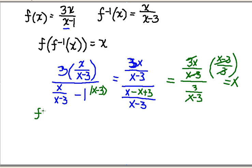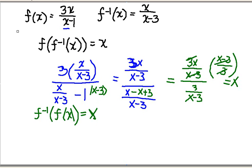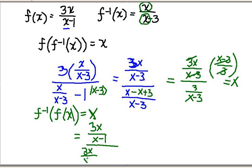Now let's try: does the composition of f inverse of f of x equal x? In this one, I'm going to go to my inverse function and wherever I have an x, I'm going to plug in my f of x. So I have an x in the numerator, but in place of that x I'm going to plug in 3x over x minus 1. And in my denominator, I have an x, so in place of that x I'm going to plug in 3x over x minus 1. And then I've got a minus 3.